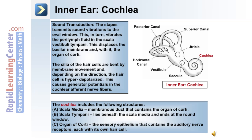During sound transduction, the stapes transmit sound vibrations to the oval window, which in turn vibrates the perilymph fluid in the scala vestibuli and scala tympani. This displaces the basilar membrane and with it the organ of corti. The cilia of the hair cells are bent by membrane movement, and depending on the direction, the hair cell is hyperpolarized or depolarized. This causes generator potentials in the cochlear afferent nerve fibers.